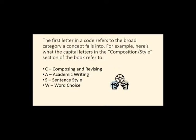The first letter in a code refers to the broad category concept falls into. So in the composition and style section of the book, you'll find C relates to composing and revising, A is academic writing, S is sentence style, W is word choice.